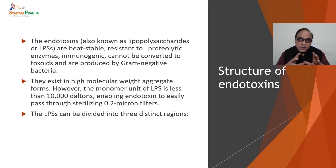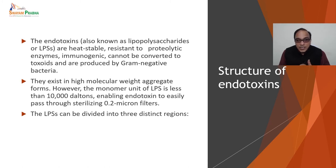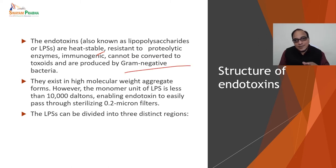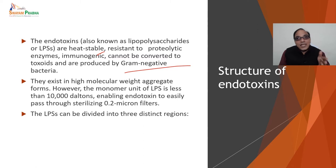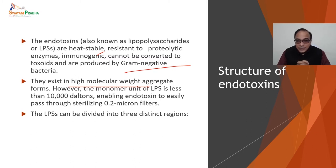Endotoxins are lipopolysaccharides (LPS). They are heat-stable, resistant to proteolytic enzymes, and immunogenic. They cannot be converted into toxoids — unlike tetanus toxin, which can be converted into tetanus toxoid and used as a vaccine. Endotoxins exist in high molecular weight aggregate forms; however, the monomer units of LPS are less than 10,000 Daltons, enabling endotoxins to easily pass through sterilizing 0.2-micron filters.